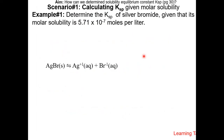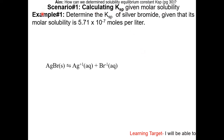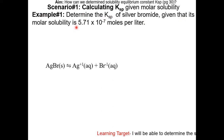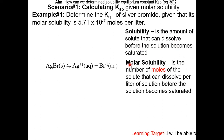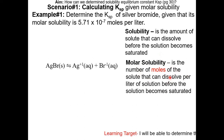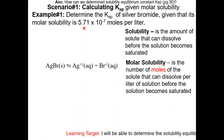We will be covering three scenarios involving Ksp. Scenario one: calculating the Ksp given the molar solubility. Example number one — determine the Ksp of silver bromide given that its molar solubility is 5.71 × 10⁻⁷ moles per liter. Solubility is defined as the amount of solute that can be dissolved before the solution becomes saturated. Molar solubility puts it in terms of moles — the number of moles of solute that can be dissolved per liter of solution before it becomes saturated.